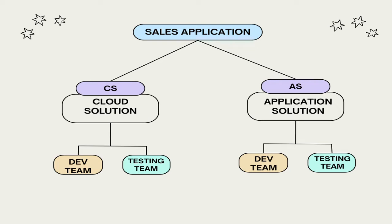When it comes to access management, for dev team I can have a different set of permissions and for testing team a different set of permissions. You can have a single team and single area path as well, but as the team or application grows it is better to have multiple area paths and multiple teams.